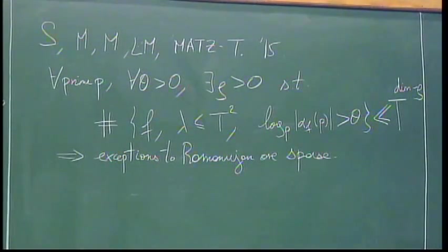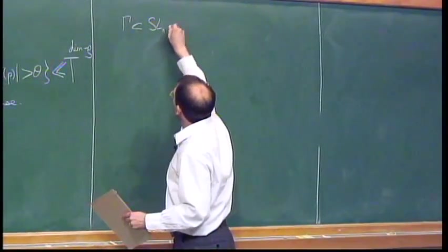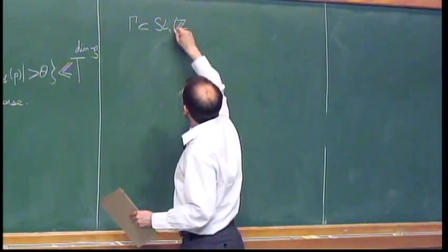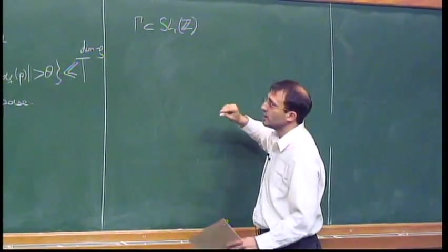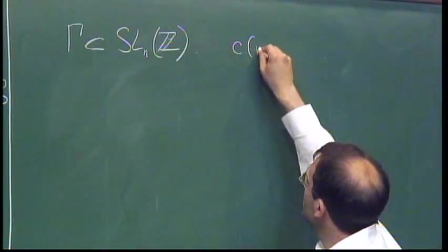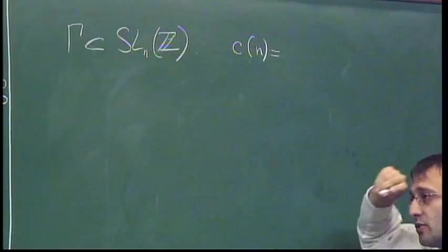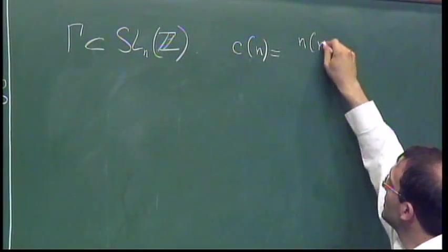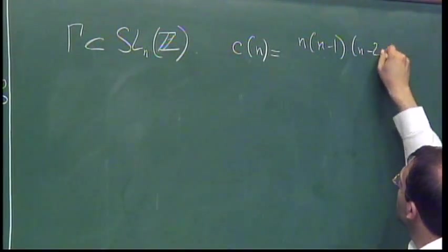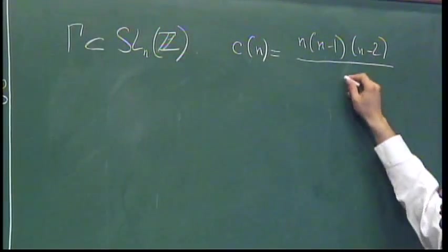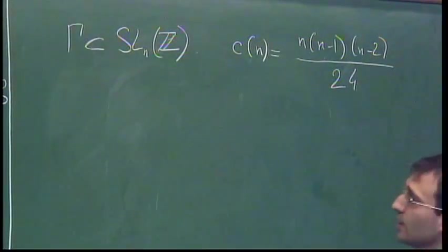So the main result I want to talk about is the following. So again, let gamma be congruent subgroup of SLn(Z). And let me give a name to an explicit constant that we call C_n. It's kind of easy to remember. It's n times n minus 1 times n minus 2. You divide by 24.